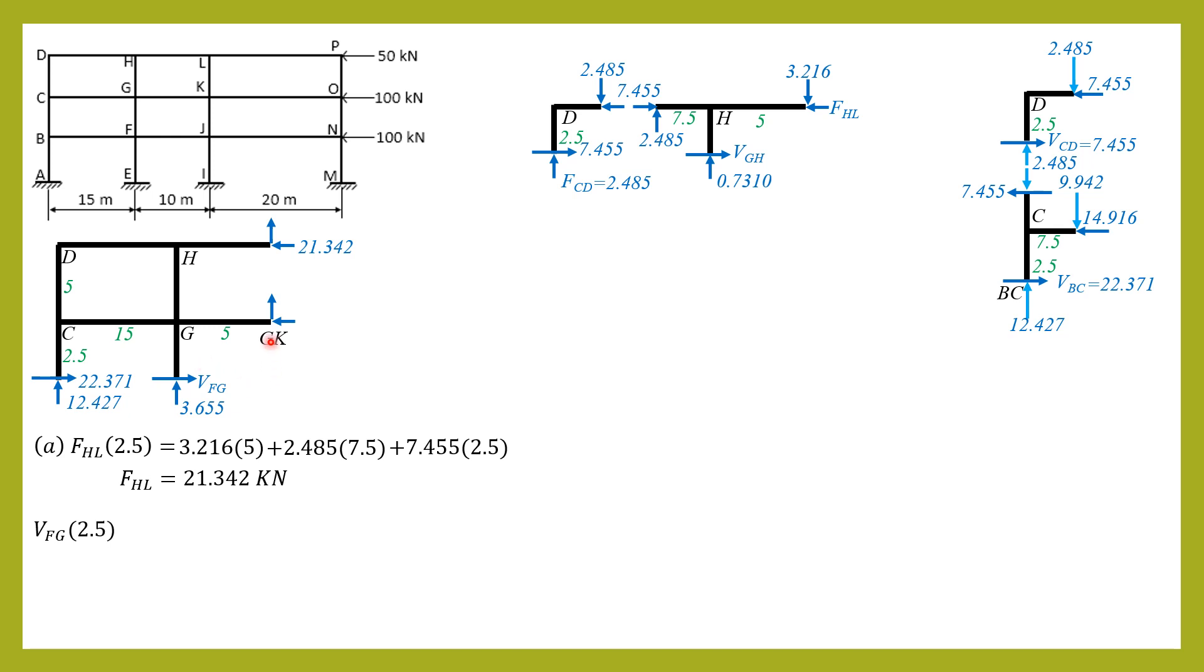VFG times 2.5 plus 22.371 times 2.5, then plus 21.342 times 5, equals 12.427 times 20 plus 3.655 (the force in FG which is solved in the preceding slide) times 5. So shear in FG can now be solved. It is equal to 41.67 kilonewtons.